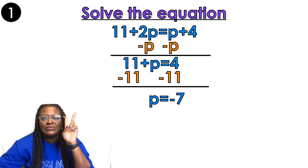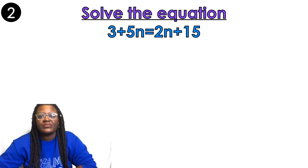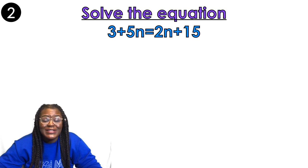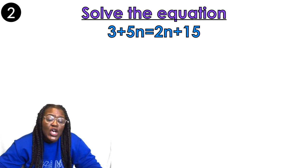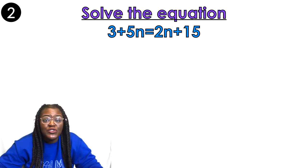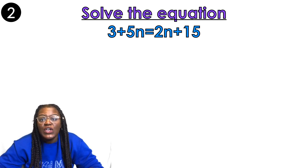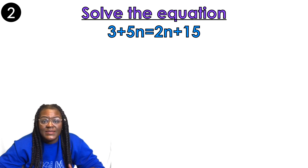Example number 2: I have 3 plus 5n equals 2n plus 15. I don't have any distribution, so I can skip that step. There are no like terms to combine on the left or the right. So my focus right now is getting the variables on the same side of the equation.